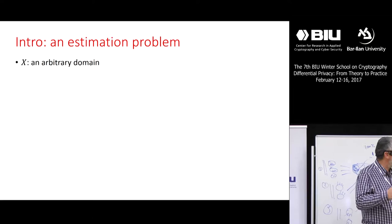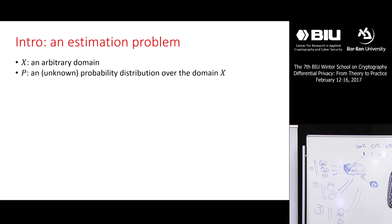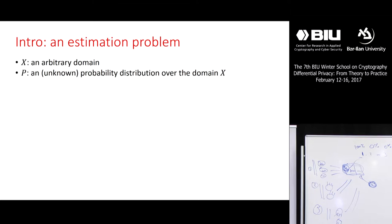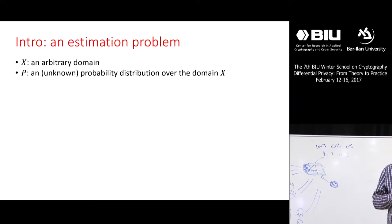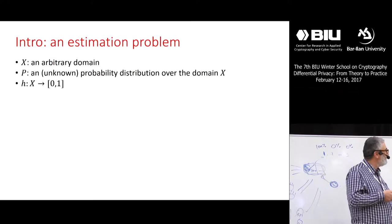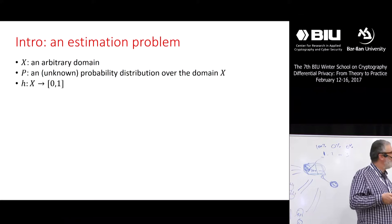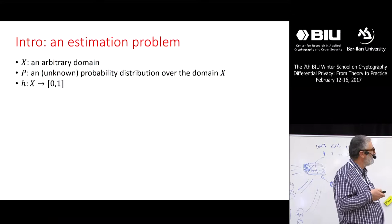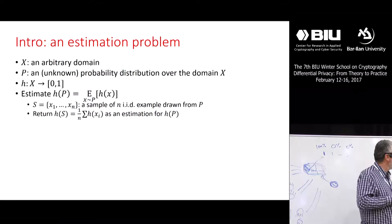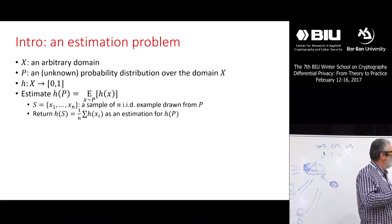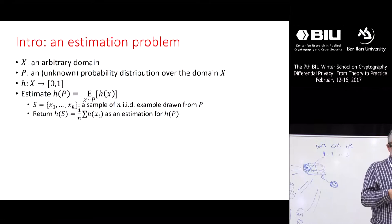Suppose we have this estimation problem. We have an arbitrary domain X, and there's an unknown probability distribution P over the domain X. Intuitively, think about this pair X and P as describing a population — a population of humans, of cows, or whatever you're interested in. Suppose there is a predicate h taking elements of the domain and mapping them — I actually made that a continuous function mapping it into the range 0 to 1.